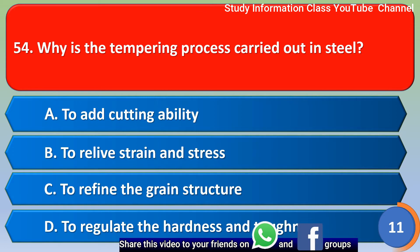Next question: Why is the tempering process carried out in steel? Option A: to add cutting ability. Option B: to relieve strain and stress. Option C: to refine the grain structure. Option D: to regulate the hardness and toughness. The correct answer is Option D: to regulate the hardness and toughness.